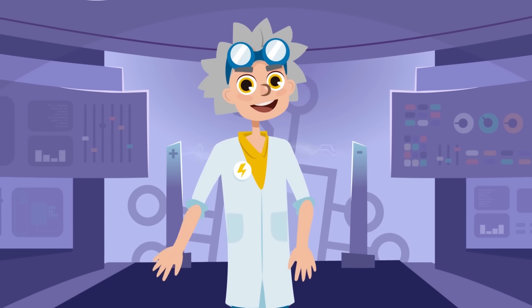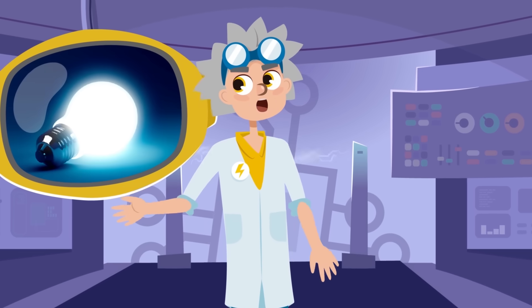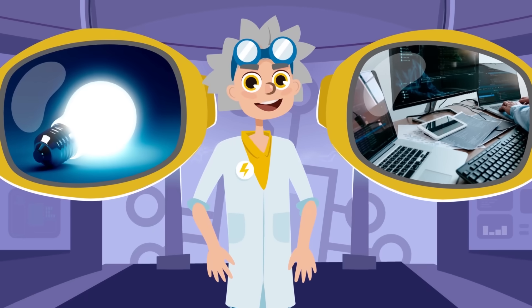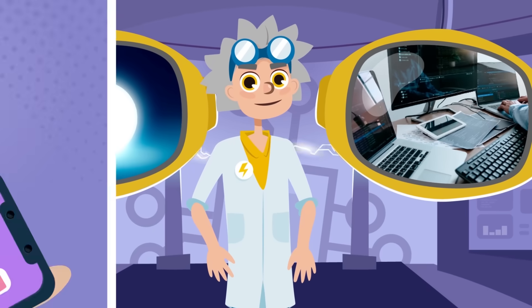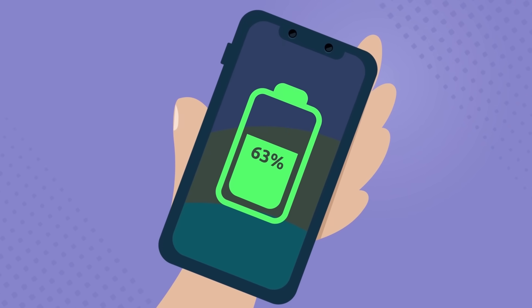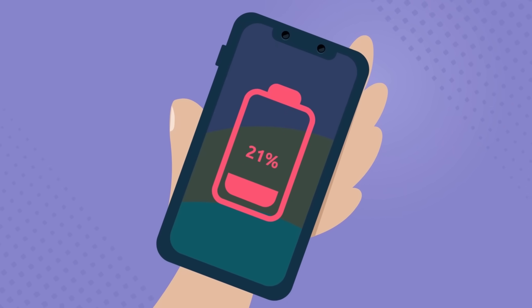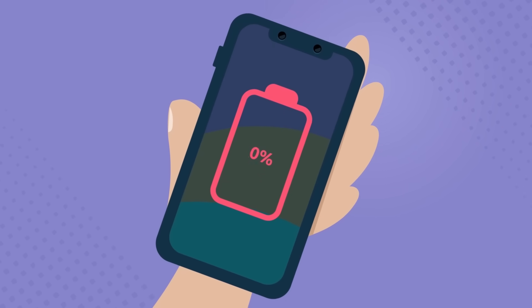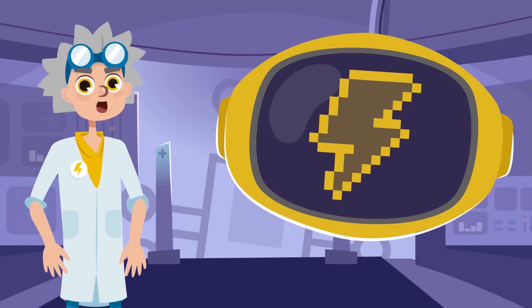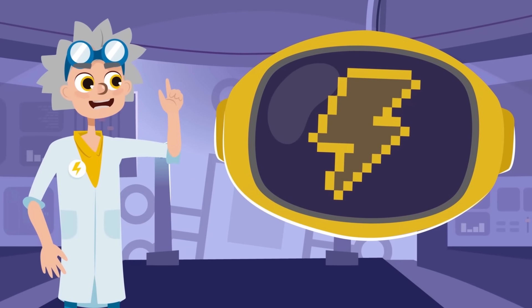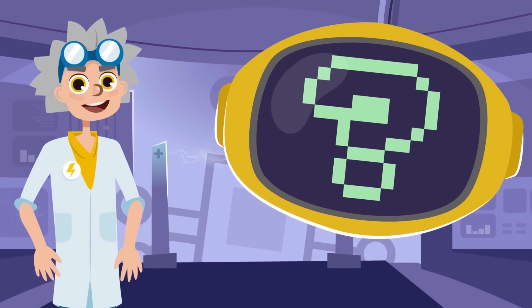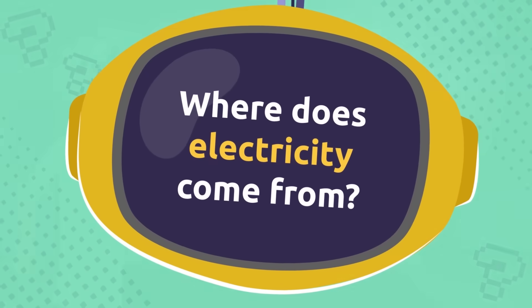Thanks! I think we learned a lot from our friends. Electricity is a type of energy we use to turn on lights or power our electronic devices. Electricity has become so important in our lives that we can't imagine living without it. As our last friend said, electricity can be produced in many different ways. Let's find out!